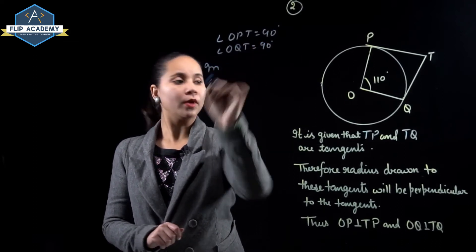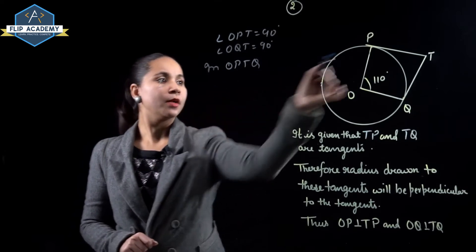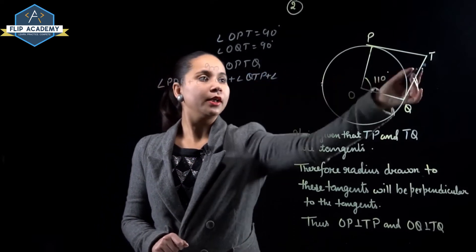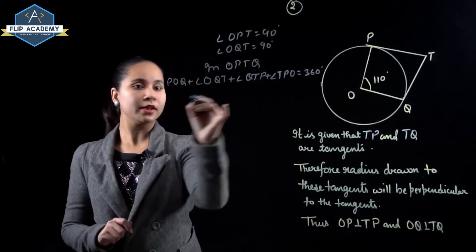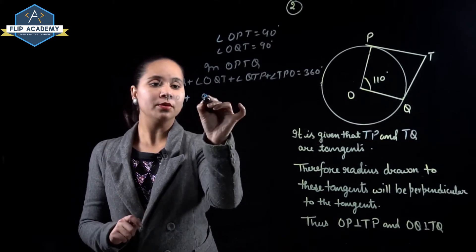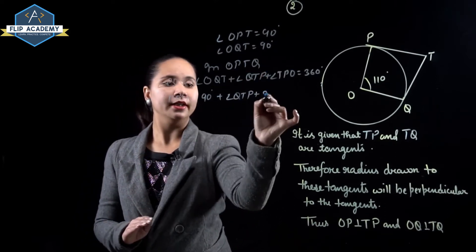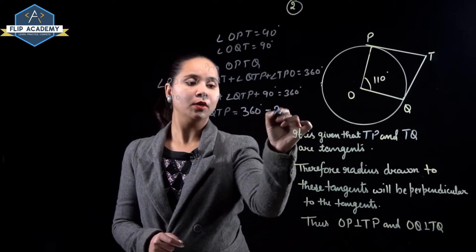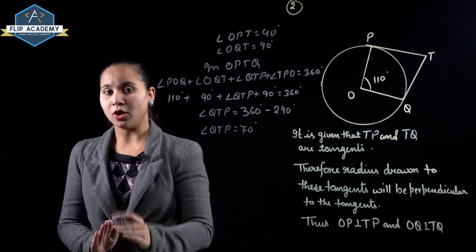Now in quadrilateral OPTQ, angle POQ plus angle OQT plus angle QTP plus angle TPO equals 360 degrees. Substituting: 110° + 90° + angle QTP + 90° = 360°. So angle QTP equals 360° − 290° = 70°. Therefore angle PTQ is 70°, and option B is correct.